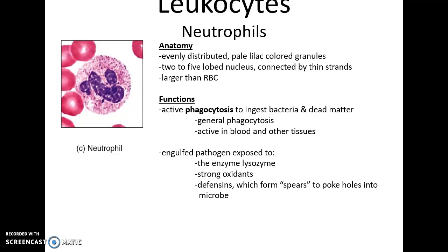Neutrophils have pale lilac-colored granules scattered throughout their cytoplasm. Their nucleus is often two to four lobes, and they are larger than red blood cells. They function in general phagocytosis — they will ingest bacteria and dead matter. They are active in the blood and in various tissues, so they can leave the bloodstream. When they engulf pathogens, they often destroy them with enzymes from their lysosomes, or with defensins, which are little proteins that poke holes into the microbes.